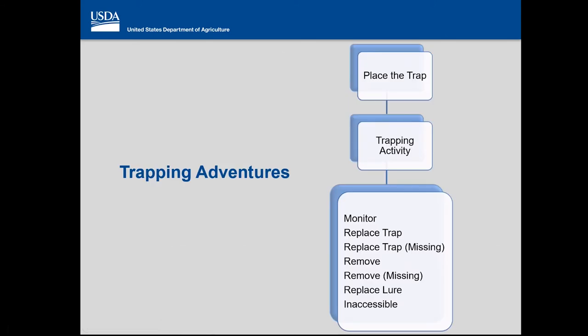Last year, placing a trap would typically happen at the beginning of the year — although it could happen at any point — where you decide to place a trap in a location. Placing a trap stores the trap location on the map and the information about that trap site itself. Then all future visits were considered a trapping activity: monitor, replace, remove, inaccessible, those types of things. This year, we're adding an install trap activity.